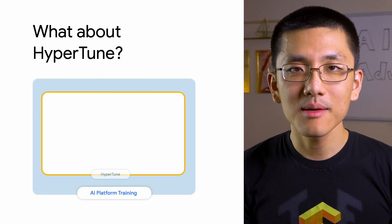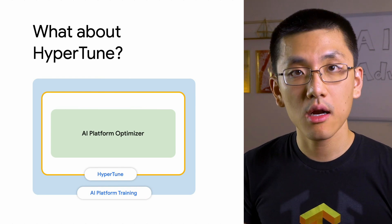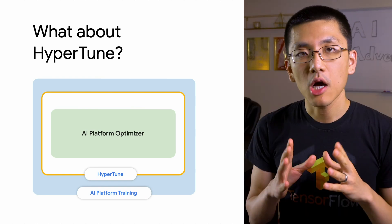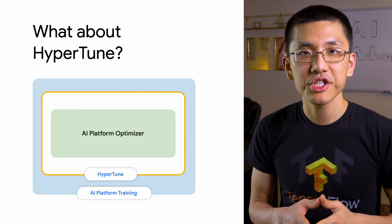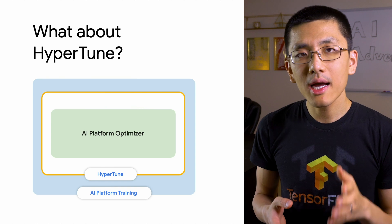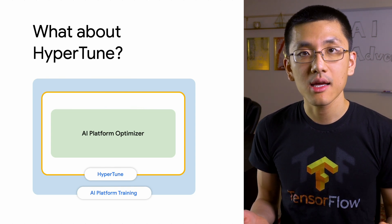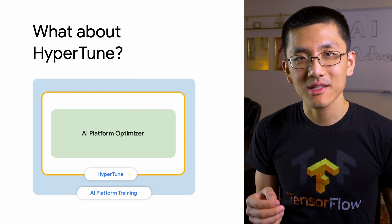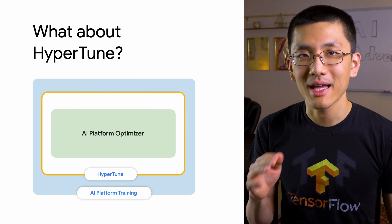Some of you may recall that AI Platform training already has a built-in feature called HyperTune, which takes care of hyperparameter tuning. Under the hood, HyperTune uses the same technology as AI Platform Optimizer. But whereas HyperTune only works as part of AI Platform training, Optimizer is a generic system that you can use to optimize any system, any place.